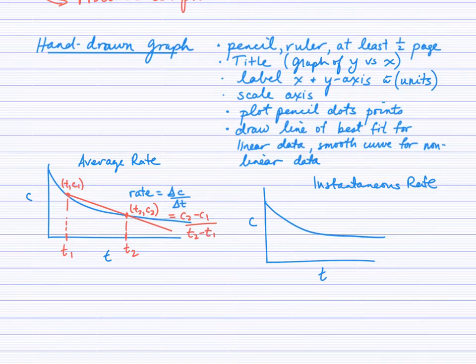Instantaneous rate, on the other hand, would be just looking for the rate at a particular point in time. Let's say T1. Now when you draw your line, it needs to be a tangent. It needs to be a straight line that touches the curve at only one point. Average rate comes from the slope of the secant, which is the line that touches the curve at two points, T1 and T2. Instantaneous rate comes from finding the slope of the tangent at T1.